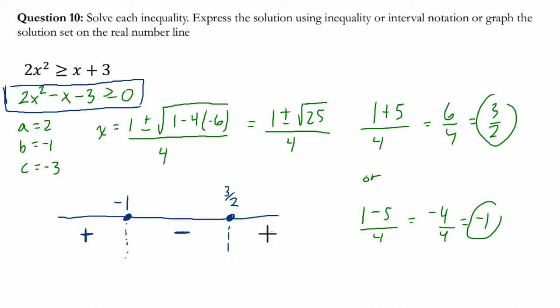And then over here, we're also going to get a positive. If we plug in positive 2, we get 2 times 4, which is 8, minus 2, which is 6, minus 3, which is 3, and it's also a positive.